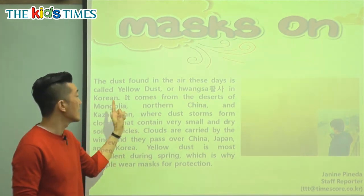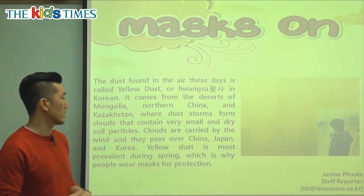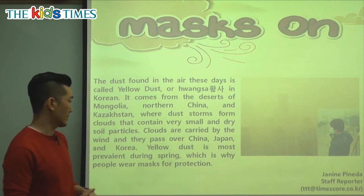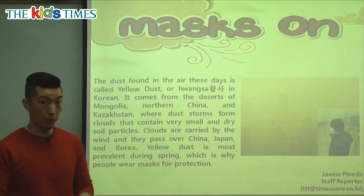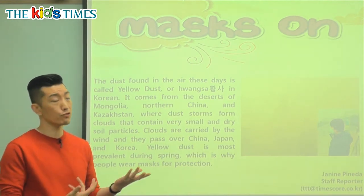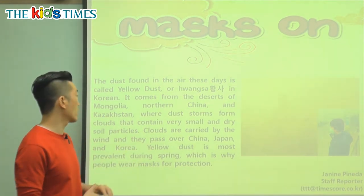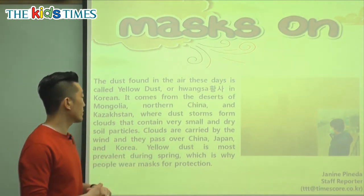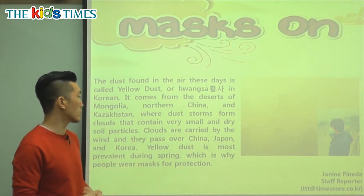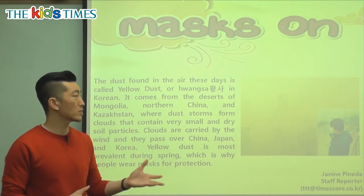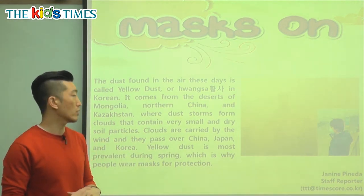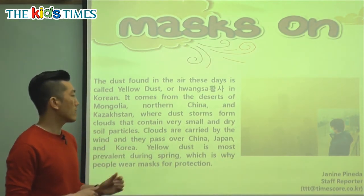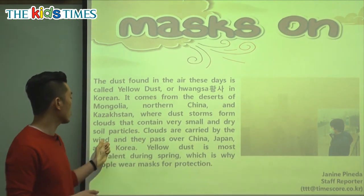So let's see where it comes from. It comes from the deserts of Mongolia, Northern China, and Kazakhstan, where dust storms form clouds that contain very small and dry soil particles. We thought it only comes from China, but it also comes from Mongolia and Kazakhstan. A dust storm is when dust is blown by strong winds and carried very far.